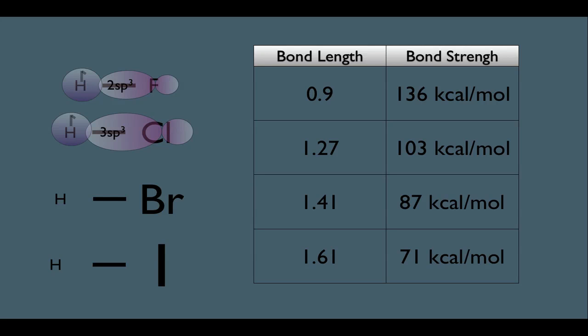Because we're hybridizing the third shell of this Cl atom, this means his hybridized orbitals are going to be bigger. Notice this trend continues.